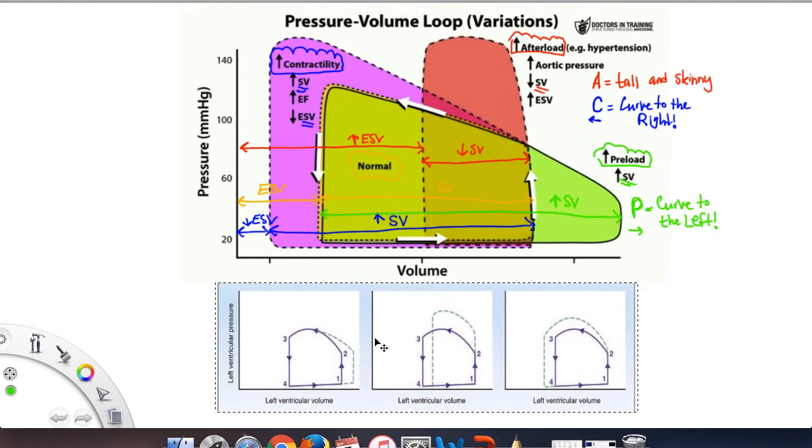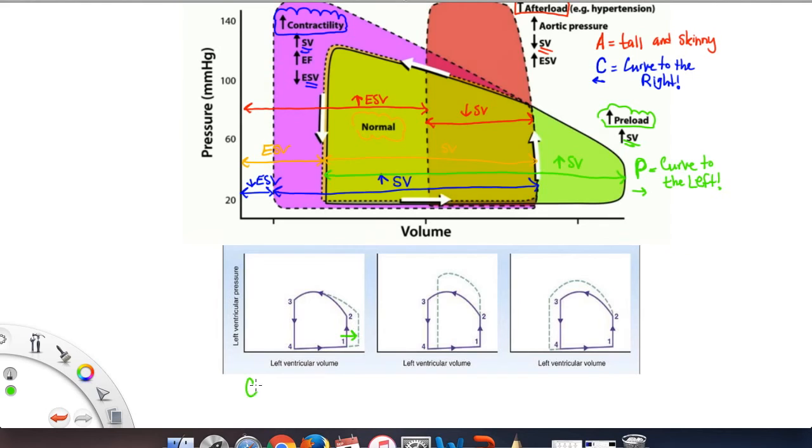Alright, now let's test ourselves. The first one, we notice that the curve is to the right. So what did we say? When we write increased preload, the P is to the right. So then we know that this is the curve of increased preload.